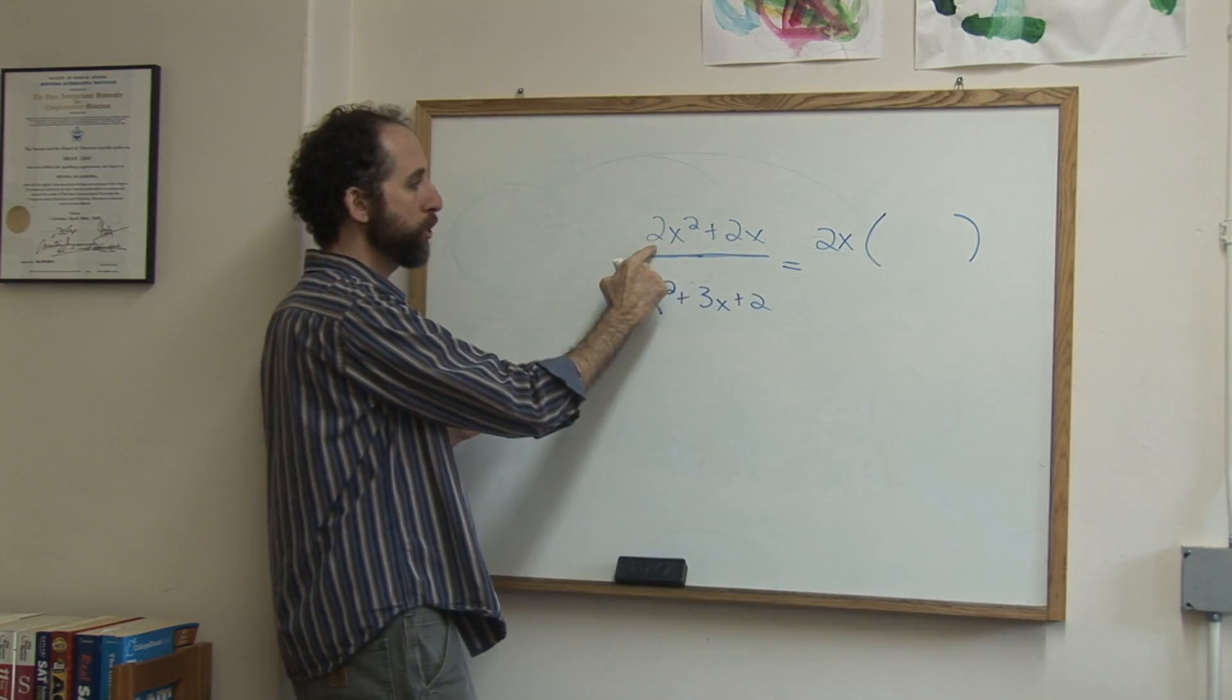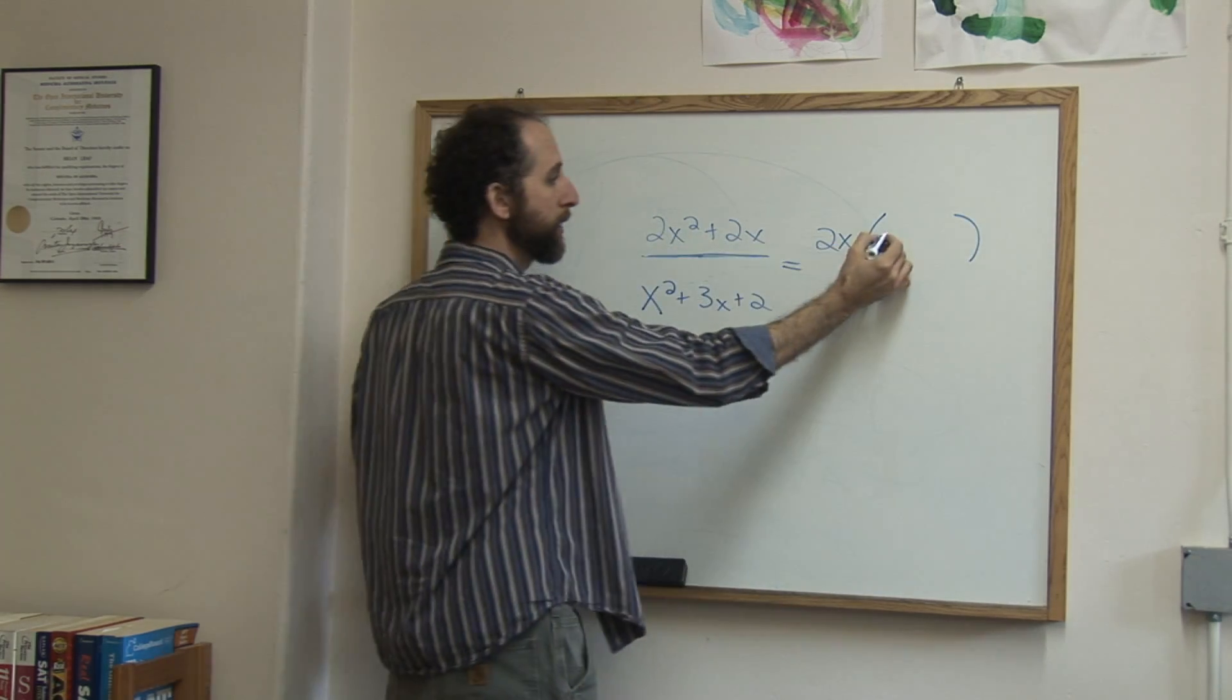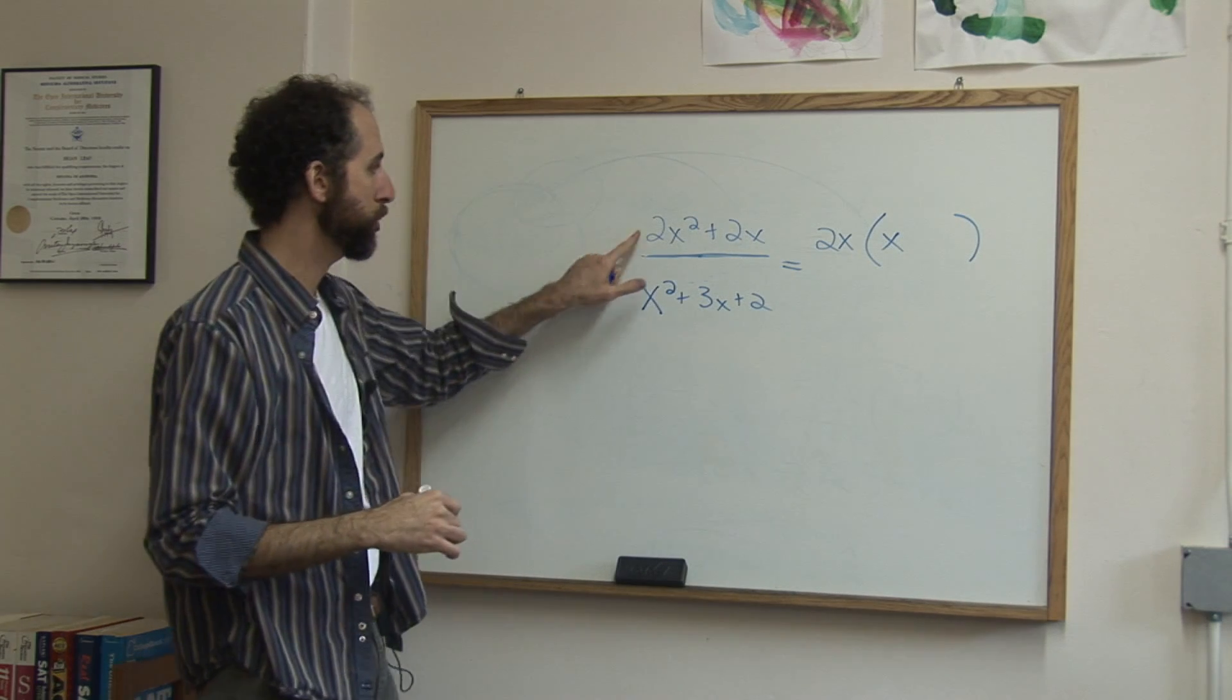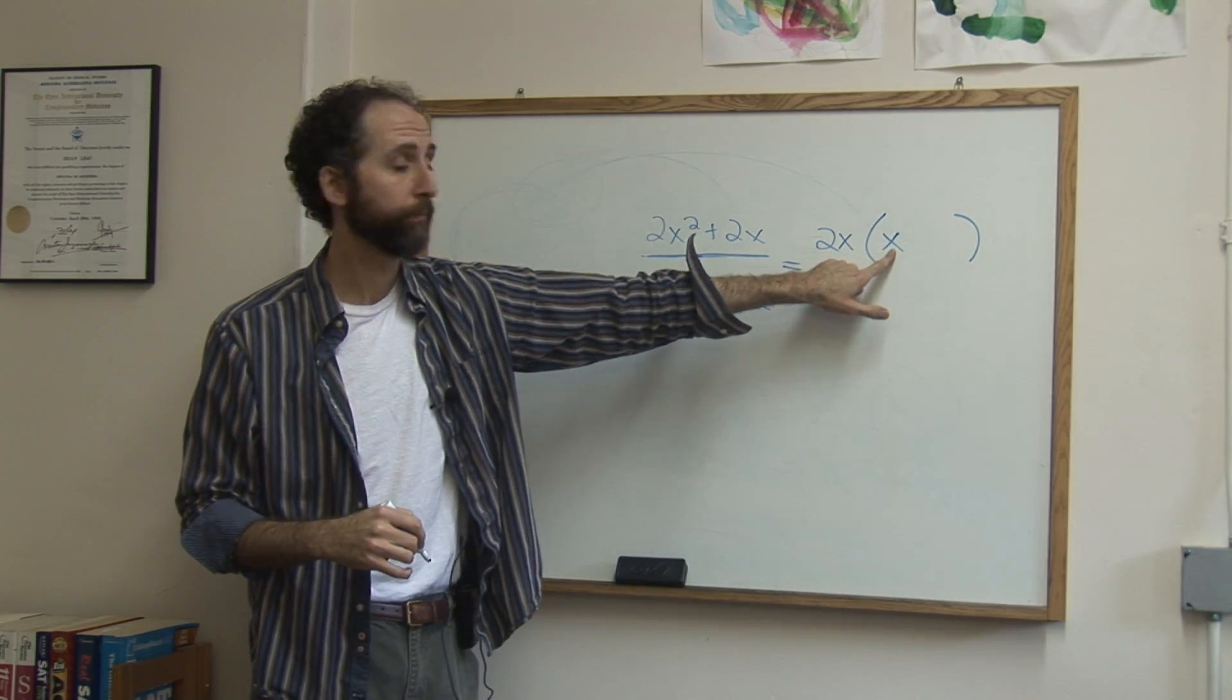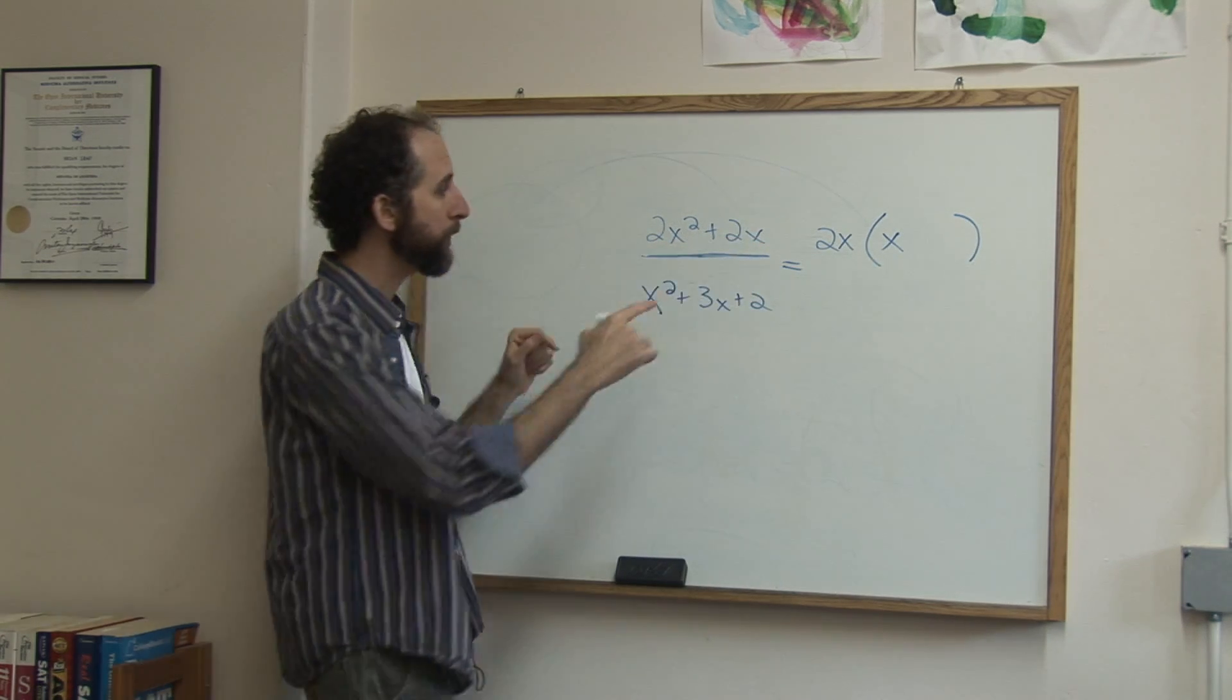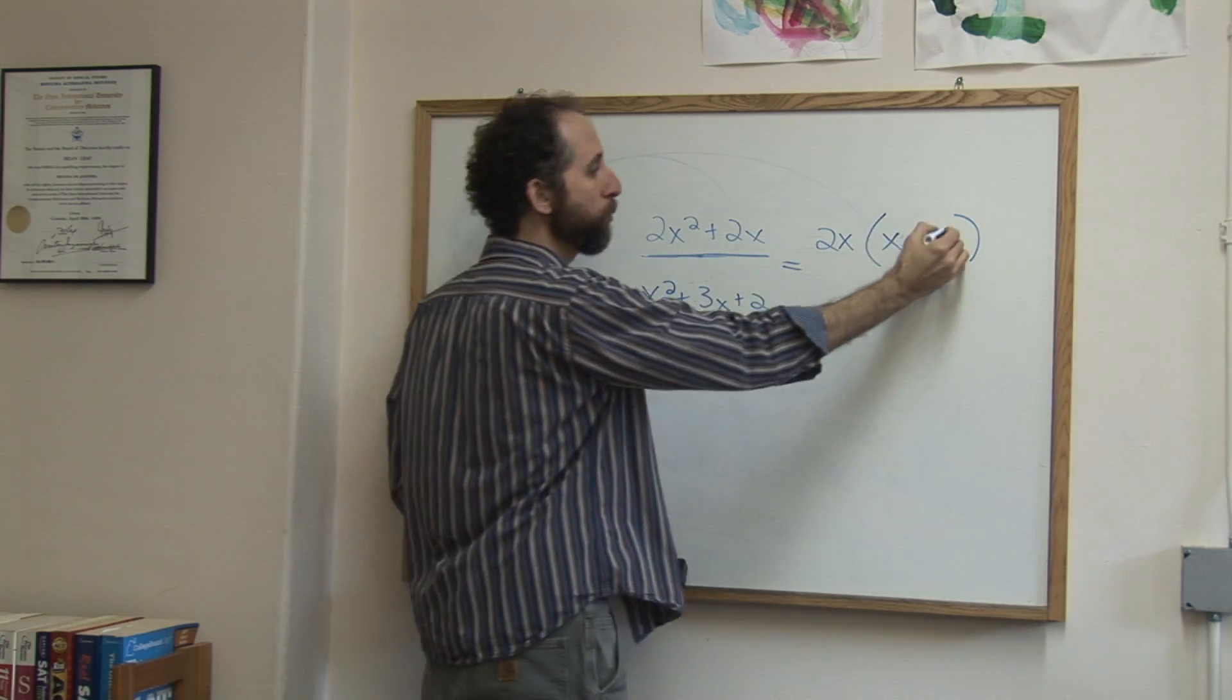And when I factor out 2x here, I'm left with x. And by the way, what that really means is 2x² divided by 2x leaves me an x. I'm going to factor 2x out of here. 2x divided by 2x is 1.